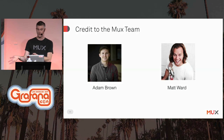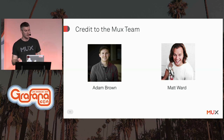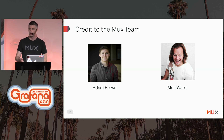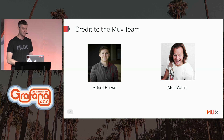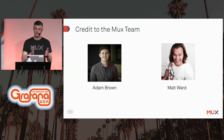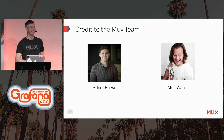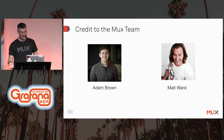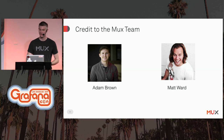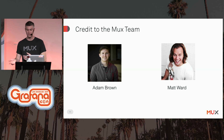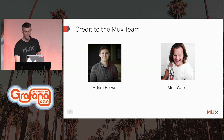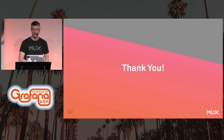I'd like to give some credit to other members of the MUX team. Adam Brown, one of the founders of MUX, developed a lot of our early monitoring systems, including the decision to use Grafana in 2016 — which has stuck and is probably the most permanent part of our infrastructure. Matt Ward was a huge advocate for using Prometheus as we migrated to Kubernetes off of Rancher, and he helped build a lot of this deploy automation as well. Thank you again for your time, and I'd love to answer any questions.